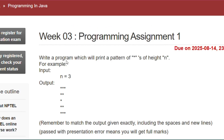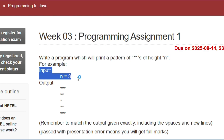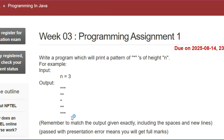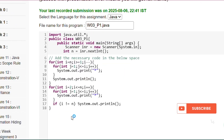In programming assignment 1, we have to write a program which will print a pattern of stars. If the input n equals 3, the output will be: first row prints 3 stars, second row 2 stars, third row 1 star, then increasing order: 2 stars then 3 stars. If n equals 4, it will print 7 rows: 4, 3, 2, 1, 2, 3, 4 stars.